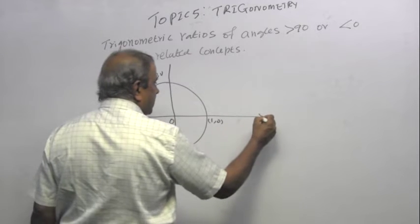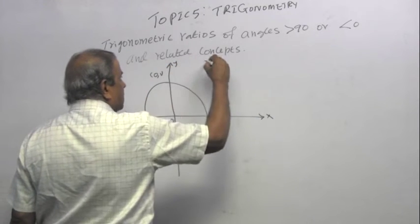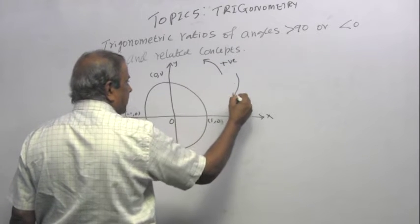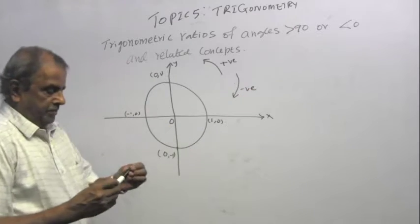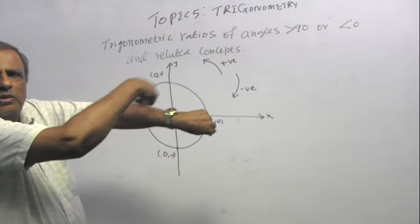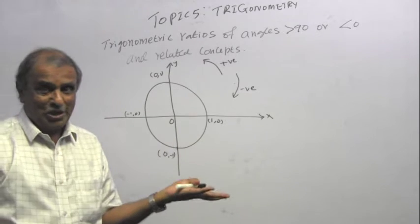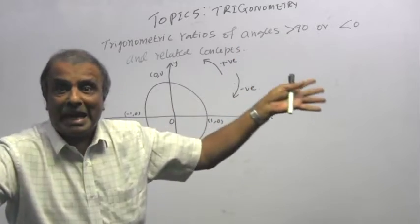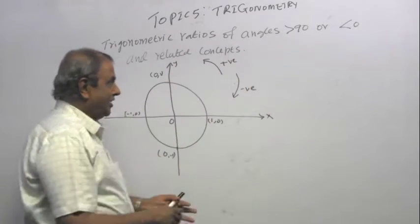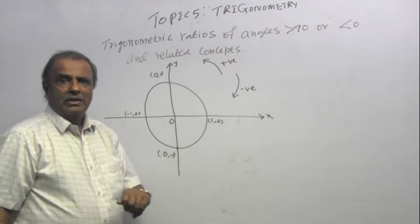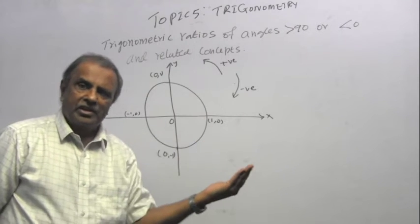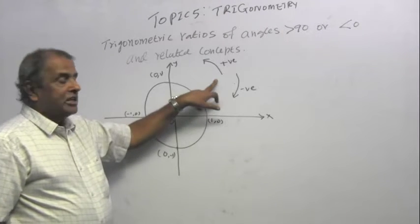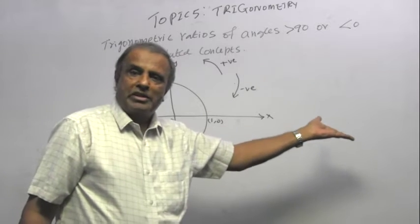That is the origin, that is the x-axis, that is the y-axis. If I measure an angle anticlockwise, it is a positive angle. If I measure an angle clockwise — the way your clock or wristwatch goes — that is, by convention, a negative angle. People who do physics or mechanics know that clockwise moments are negative and anticlockwise moments are positive.